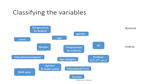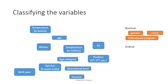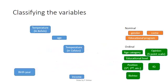Previously, we saw that the variables gender, name, and educational program do not have any logical ordering and can therefore be considered nominal. We also saw that the variables Richter, IQ, position, age category, opinion, and educational level, they do have a logical ordering. However, the difference between each value is not the same all the time. Therefore, these were considered ordinal.